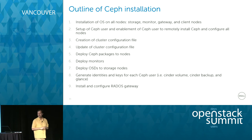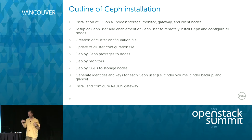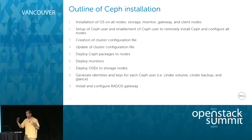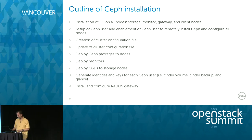Here's the general high-level outline of installing Ceph using Ceph deploy. First, install the operating system across all nodes — storage, monitor, and gateway. For us, the monitor and gateway are on the OpenStack controllers, but they don't need to be. Then set up your SSH keys, create and modify the configuration file including placement groups, deploy all the Ceph packages, generate the keys, and install the gateway at the end.